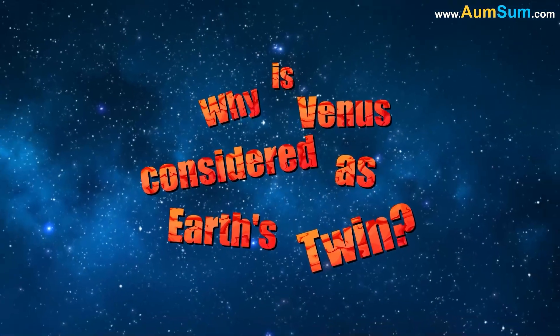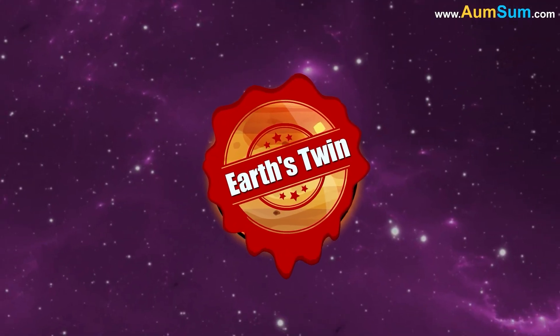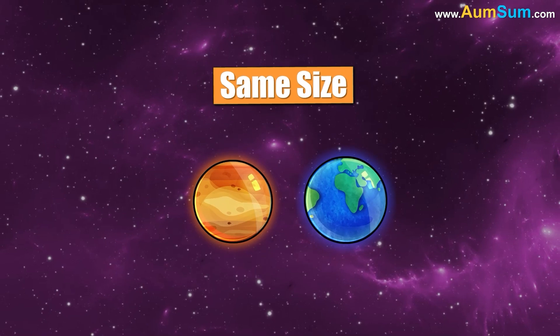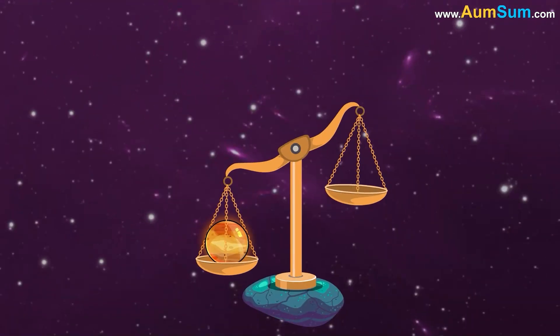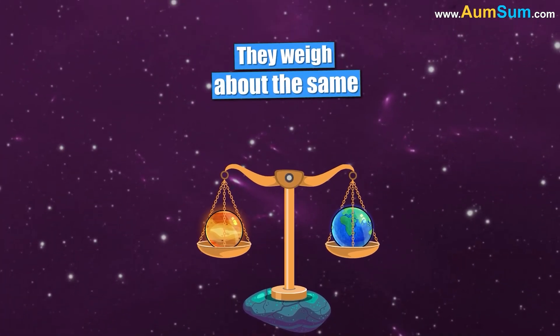Why is Venus considered as Earth's twin? Venus is called Earth's twin because of the following reasons. Firstly, Venus is almost the same size as Earth. Secondly, Venus and Earth have about the same mass, that is, they weigh about the same.